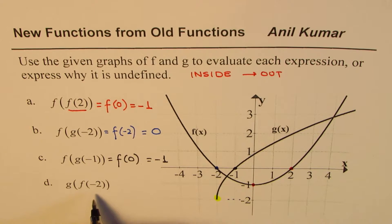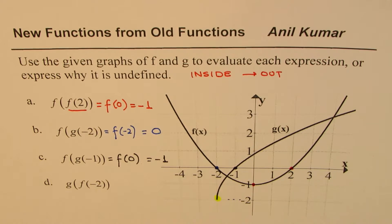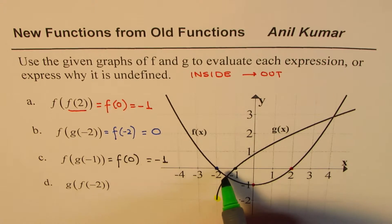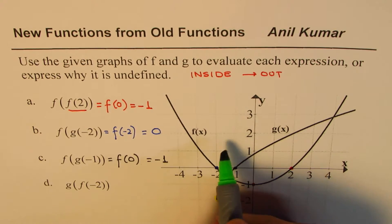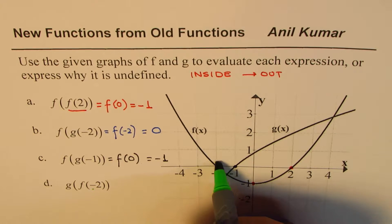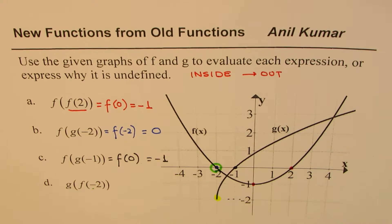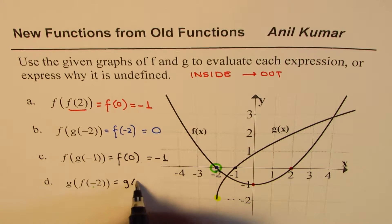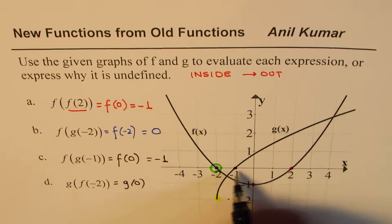The last one here is g(f(-2)). Now what is f(-2)? f(-2) is 0. That is what it is. So we could write this as equal to g(0). And what is g(0)?